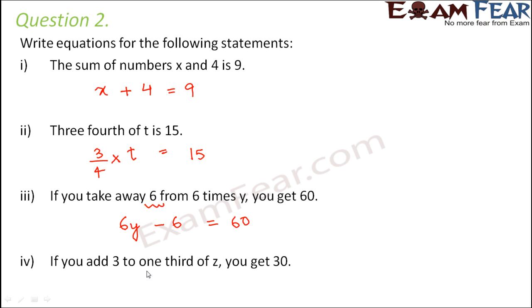If you add 3 to one third of z, how do you write one third of z? It is nothing but 1 by 3 of z. So you add 3 to 1 by 3 of z. And what do you get? You get 30. So z by 3 plus 3 equals 30. This is how we convert statements into equations.